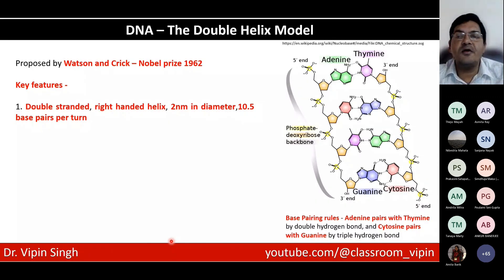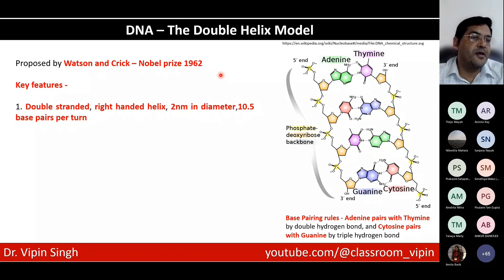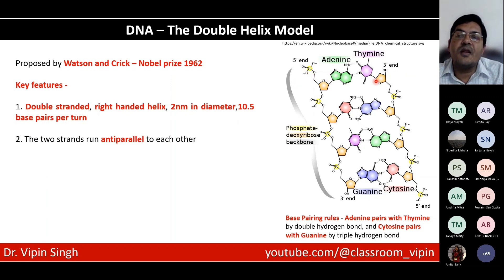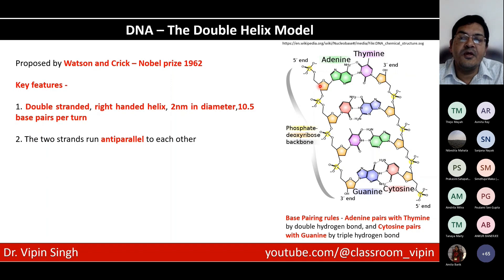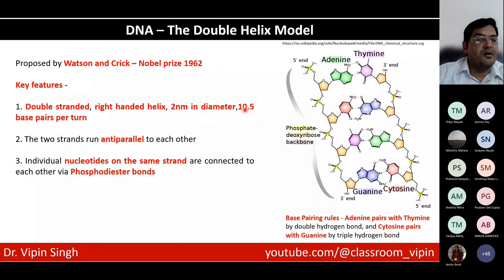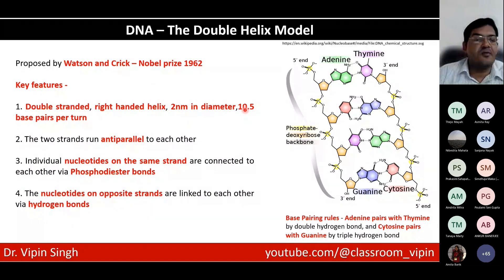The DNA double helix model: you have two strands running antiparallel to each other. This is the Watson and Crick model, Nobel Prize in 1962. Key features include a double-stranded right-handed helix, two nanometers in diameter, 10.5 base pairs per turn. The two strands run antiparallel — if one end has a five prime phosphate, it will have a three prime free OH at the other end, and the opposite strand is configured in reverse. Nucleotides on the same strand are connected by phosphodiester bonds, and between the two strands are hydrogen bonds — two hydrogen bonds between adenine and thymine, and three hydrogen bonds between cytosine and guanine.